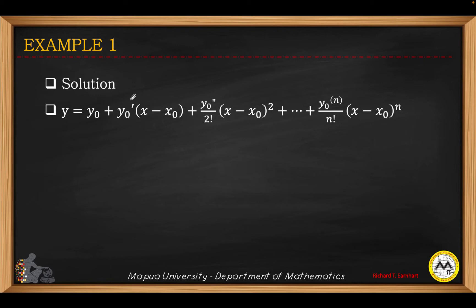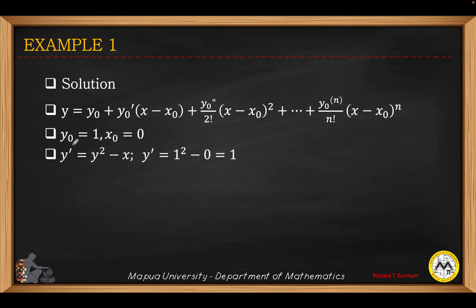This is the first derivative at the initial values. So x₀ is 0 and y₀ equals 1. Knowing that the differential equation is y prime equals y squared minus x, we substitute the values of x and y at the initial values. So this will be 1 squared minus 0, and that gives you 1. So y prime at the initial values is equal to 1, and x₀ is 0.